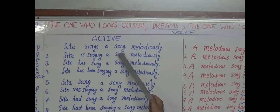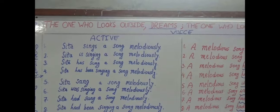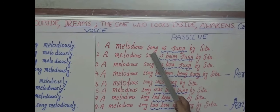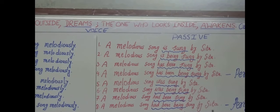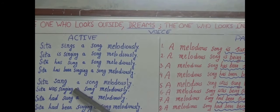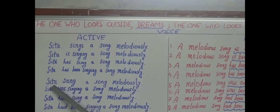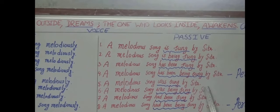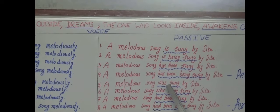Sita is the subject, song is the object. In passive voice, song becomes subject and Sita becomes object: 'A song is sung by Sita.' If I correlate it with simple past tense — 'Sita sang a song' becomes 'a melodious song was sung by Sita.' In present tense the passive is 'is sung'; here in past it is 'was sung.'